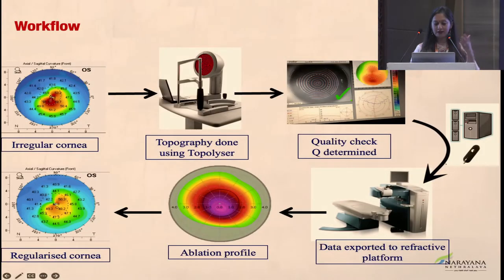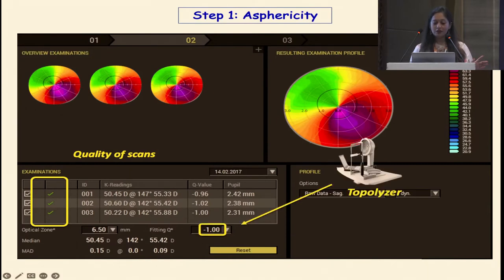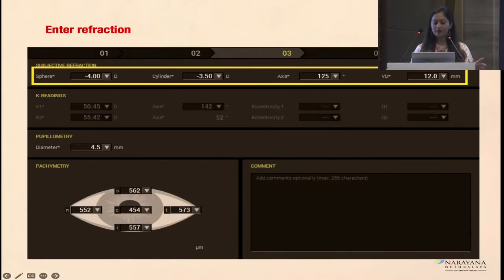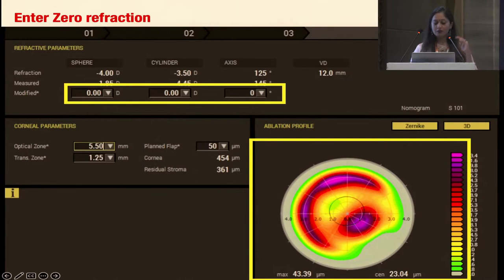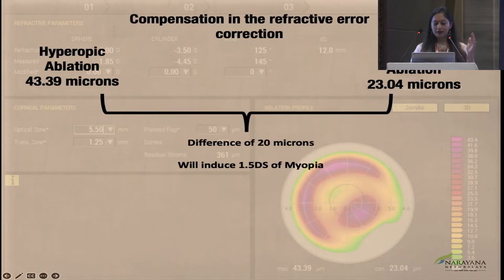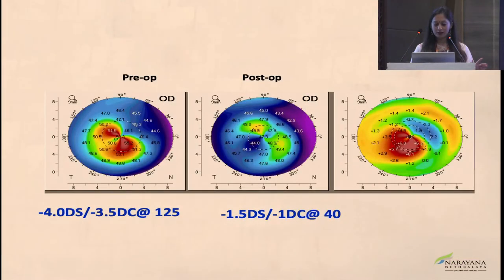Let's see a case example in Wavelight. The workflow is: do a topolyzer scan quality check, export data to the refractive platform, and plan the treatment. You go to the topo-guided mode, check scan quality, and see the Q value — which must be between 0 and minus 1, otherwise the machine won't proceed. Enter the refraction, but put zero-zero refraction first and see what center and peripheral ablation will be. Here the difference between the myopic and hyperopic ablation is 20 microns, so it will induce about 1.5 diopters of myopia. Therefore, we treat 30 percent of myopia and 30 to 40 percent of cylinder.